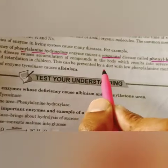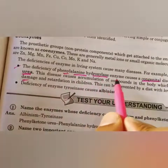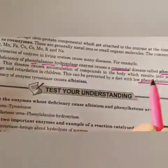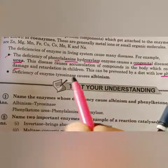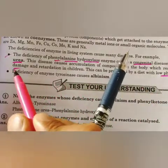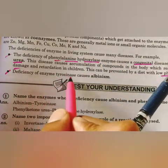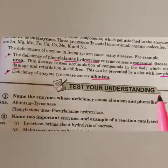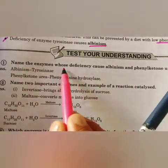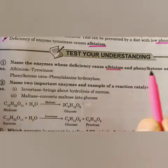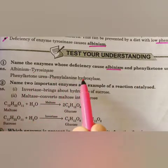Phenylketonuria can be prevented by a diet with low phenylalanine content. Similarly, deficiency of the enzyme tyrosinase causes albinism. So: albinism is due to tyrosinase deficiency, and phenylketonuria is due to phenylalanine hydroxylase deficiency.